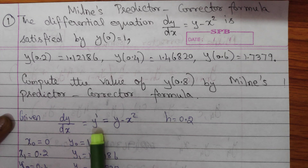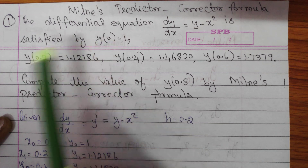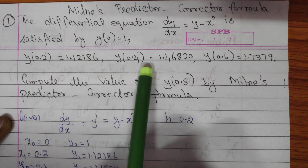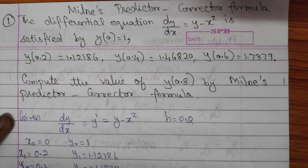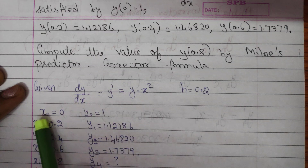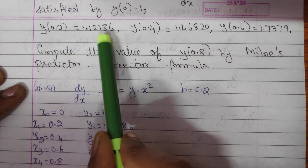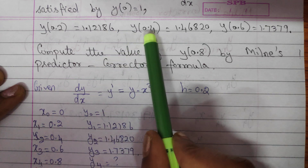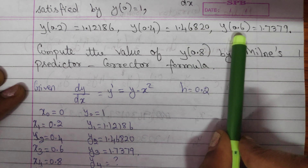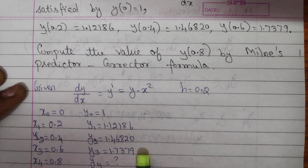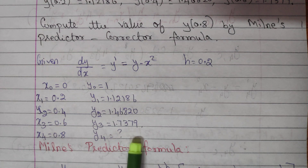The given assumption values 0, 0.2, 0.4 show that the interval between x values is 0.2, so h equal to 0.2. From the given values: x0 equal to 0, y0 equal to 1; x1 equal to 0.2, y1 equal to 1.12186; x2 equal to 0.4, y2 equal to 1.46820; x3 equal to 0.6, y3 equal to 1.7379. We have to find x4 equal to 0.8 and the corresponding y4 value.